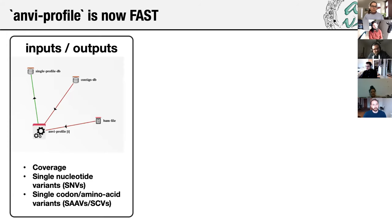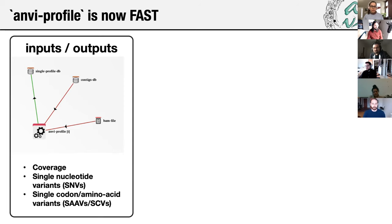So what is ANVProfile? In the standard metagenomic workflow, you've got metagenomes that are mapped to contigs — carried out by external mapping software such as Bowtie or BWA — and the data is stored as a BAM file. To get this mapping information into a format readable by AMVIO, the program ANVProfile creates a database taking that BAM file as input and summarizes its information. This process involves reading each and every read, and through this iterative analysis that can contain billions of reads, coverage values, single nucleotide variants, single codon variants, and other things are calculated and stored in the profile database.